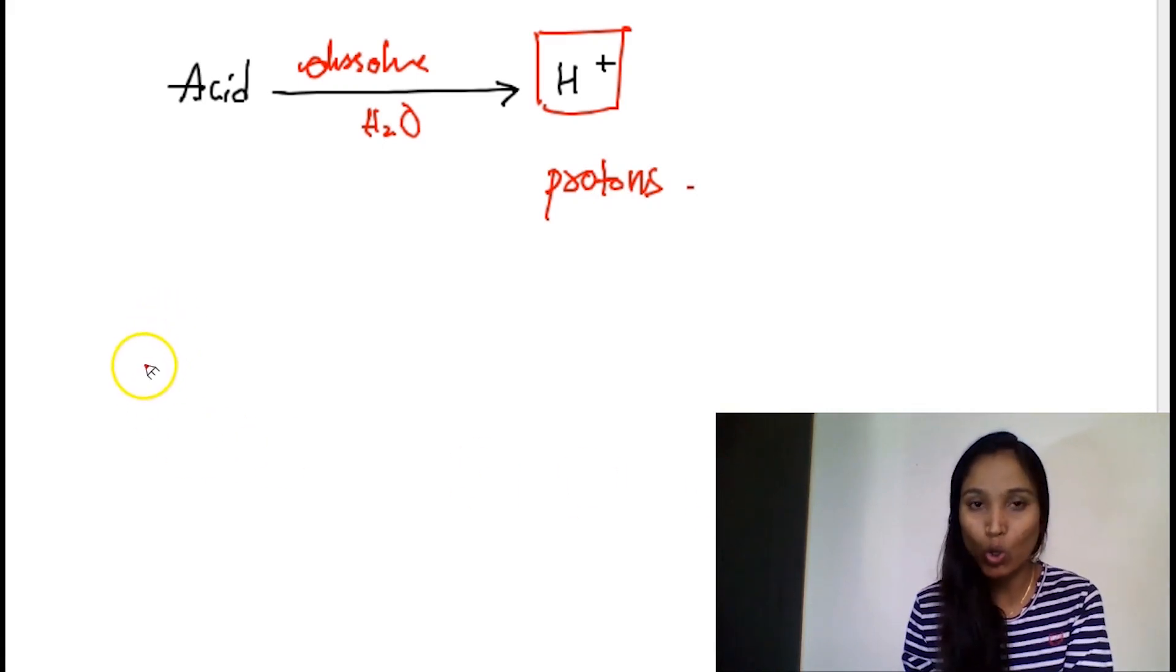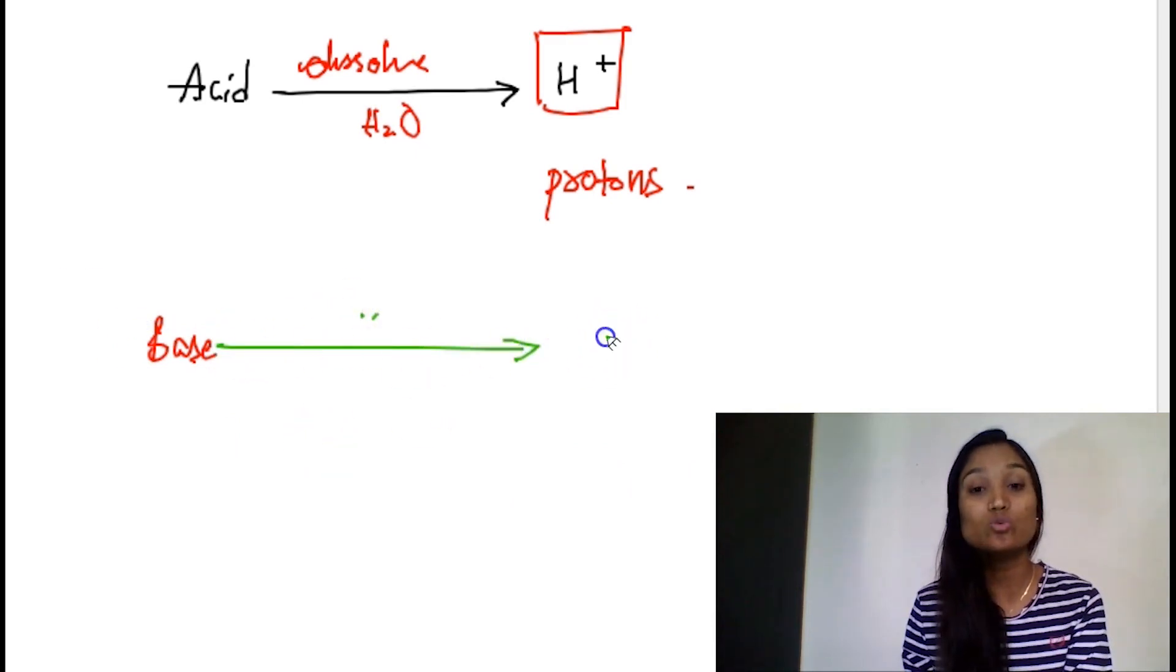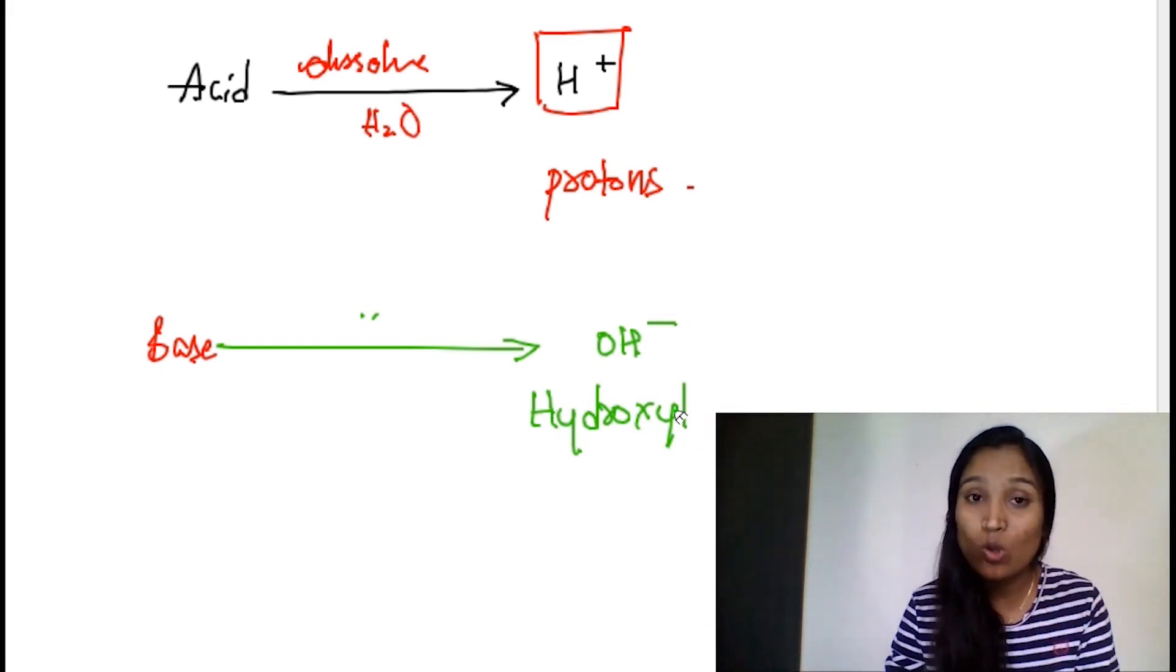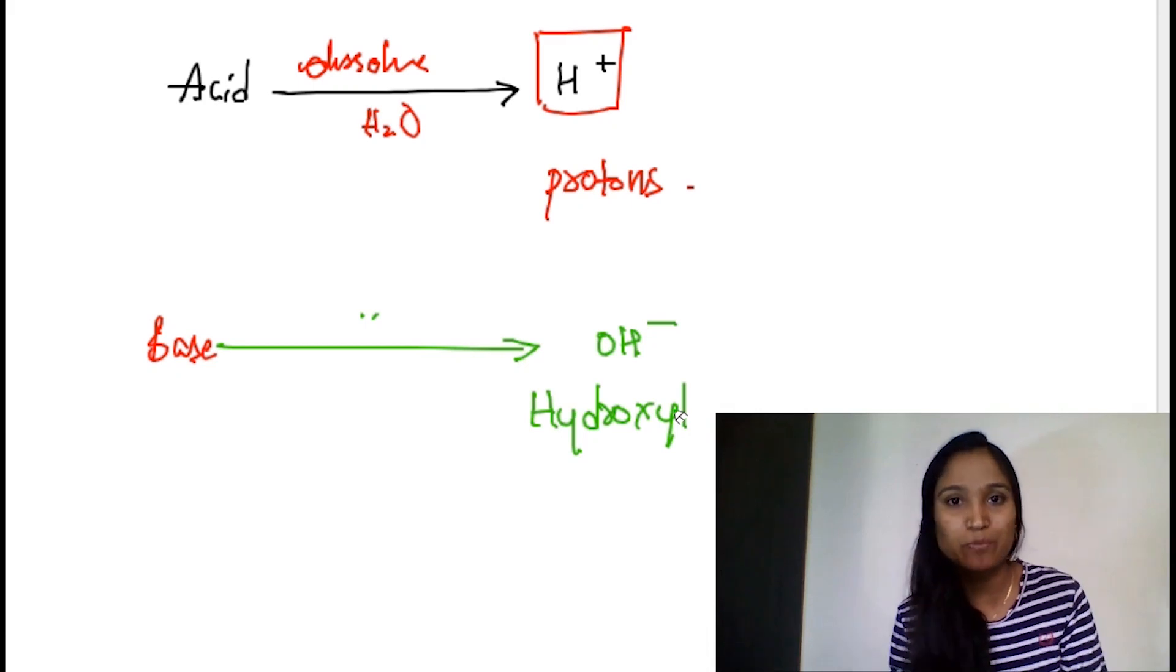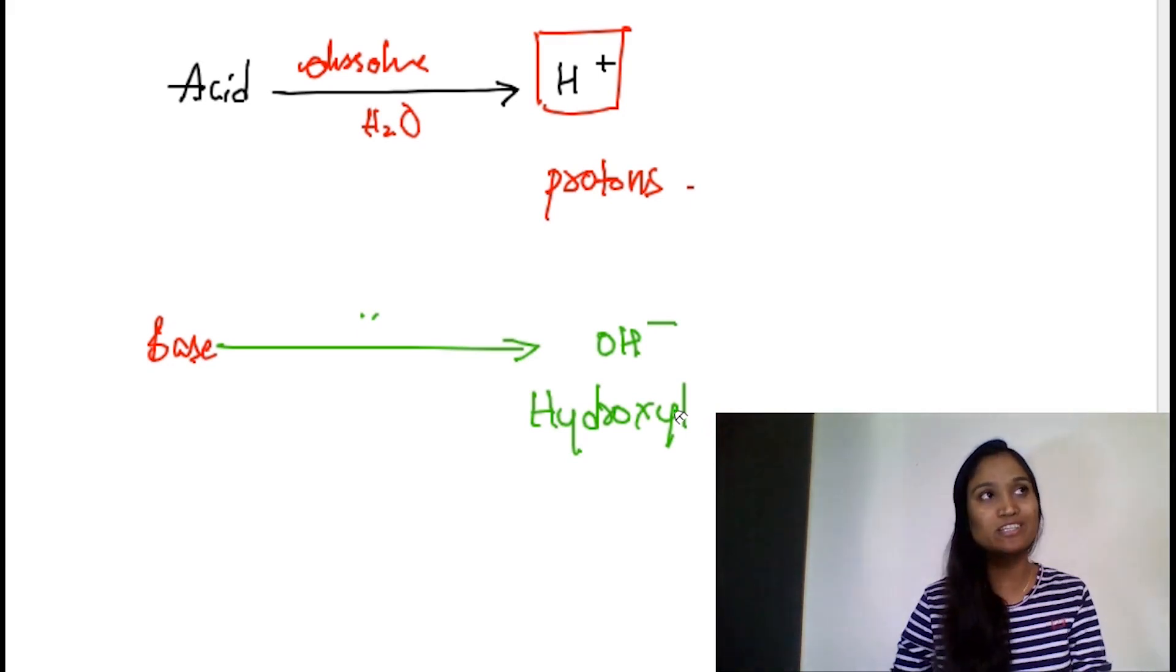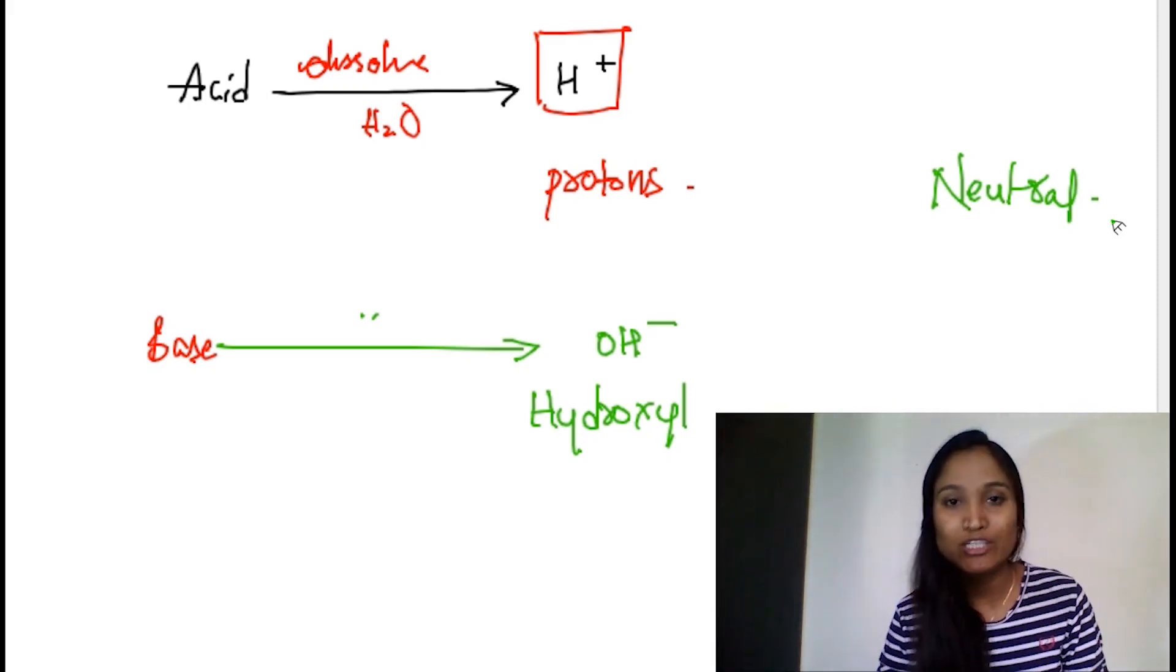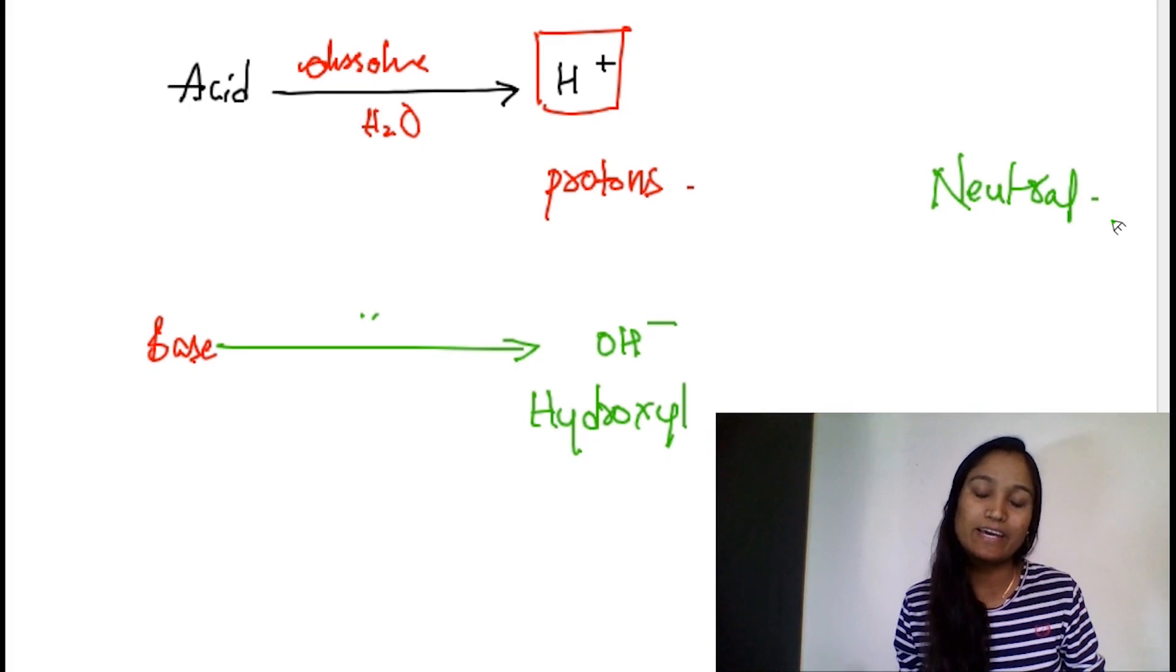What is a base? Base is also a substance, and this substance on dissolving into water leads to formation of OH minus ions. These ions are called as hydroxyl ions. If something doesn't either have protons or hydroxyl ions, it's not acid neither base. Then it is neutral. It doesn't have any acidic or basic character.